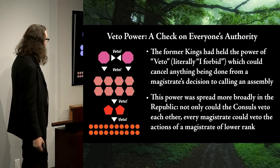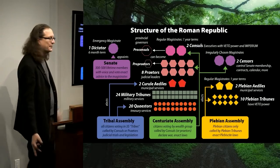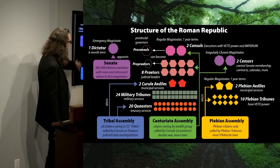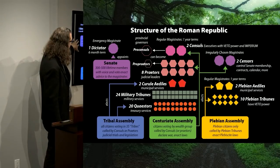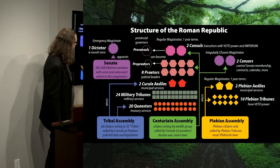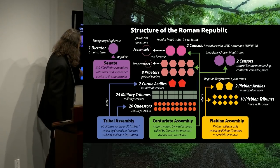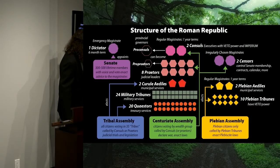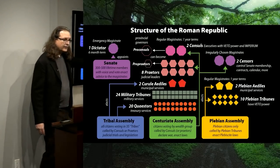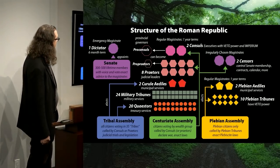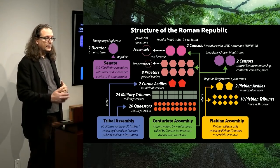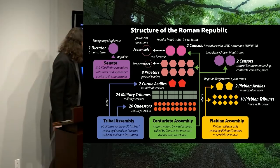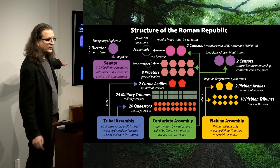Back to the structure: we have the tribal and centuriate assemblies, the Senate as an advisory body of nobles critical for day-to-day ruling, legislation happening down in the assemblies when organized and led by the consuls and praetors. Now we get to the plebeian assembly and plebeian tribunes and aediles — these are all emerging in the first century or so of the Roman Republic, after the other assemblies already existed.